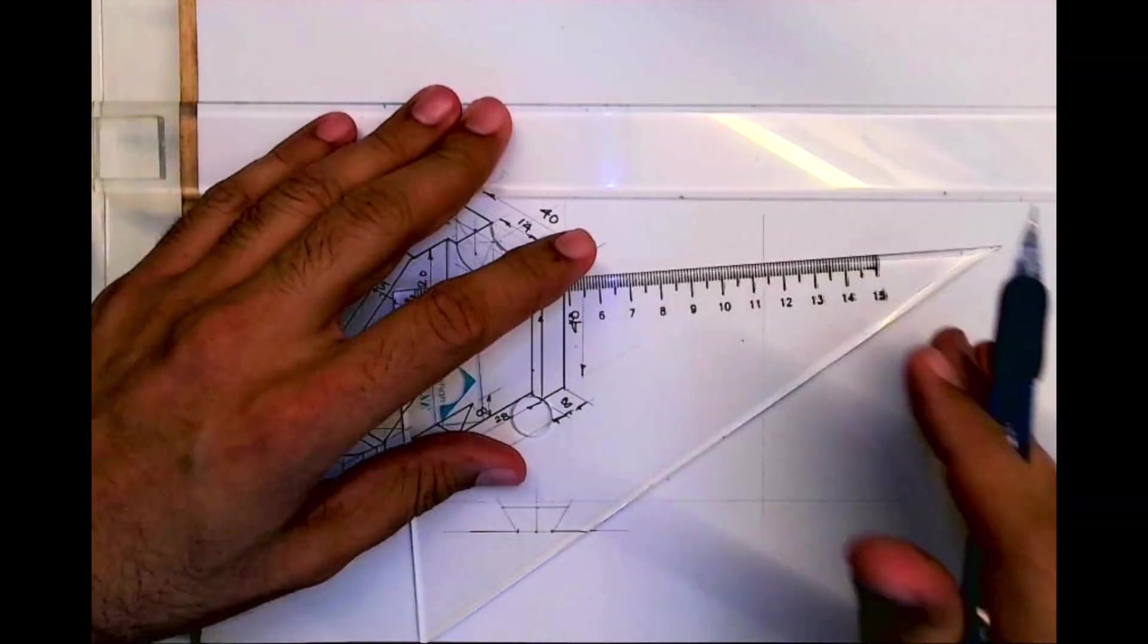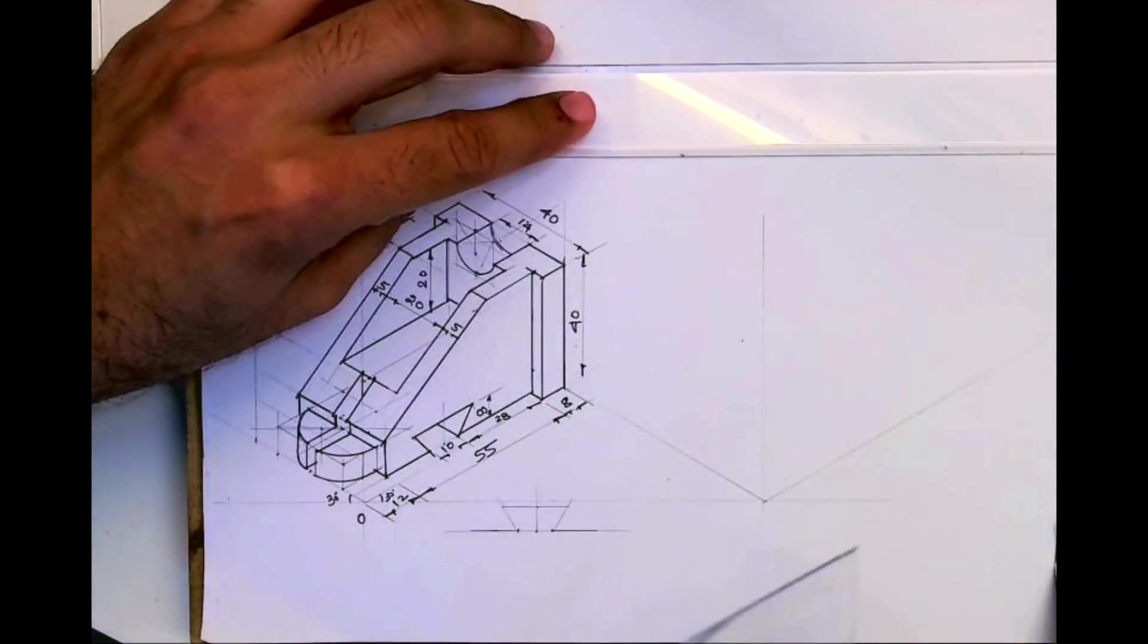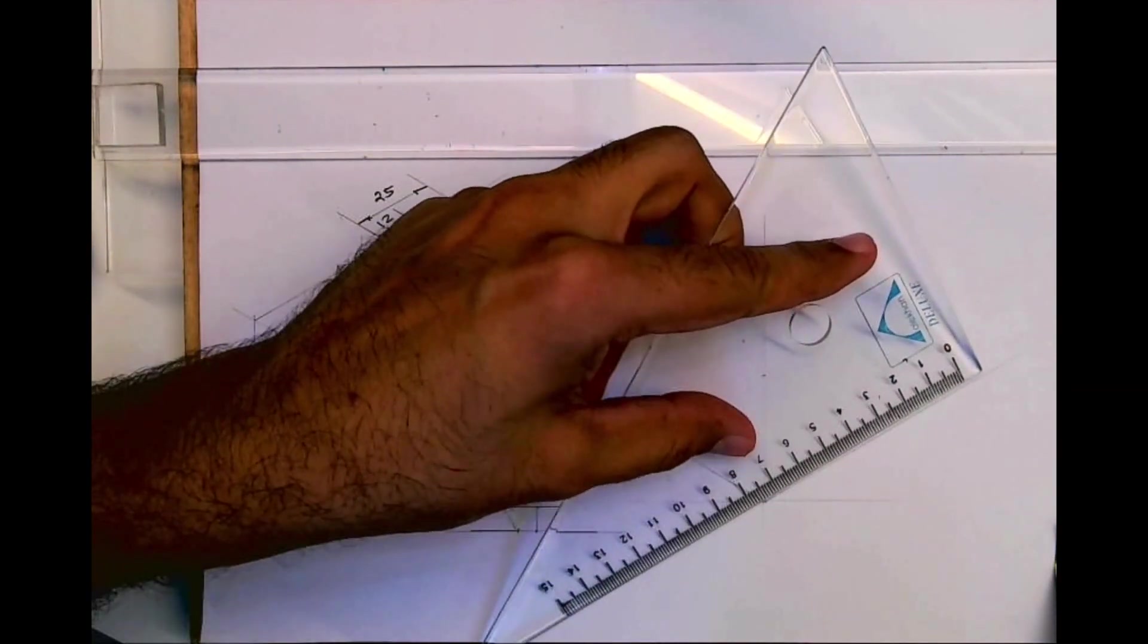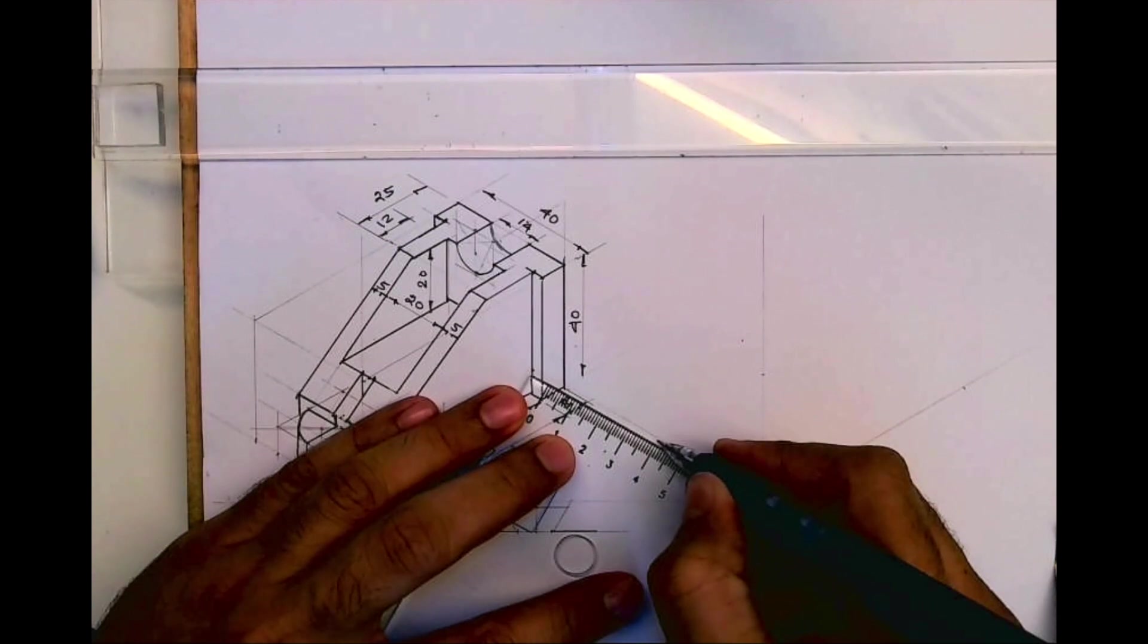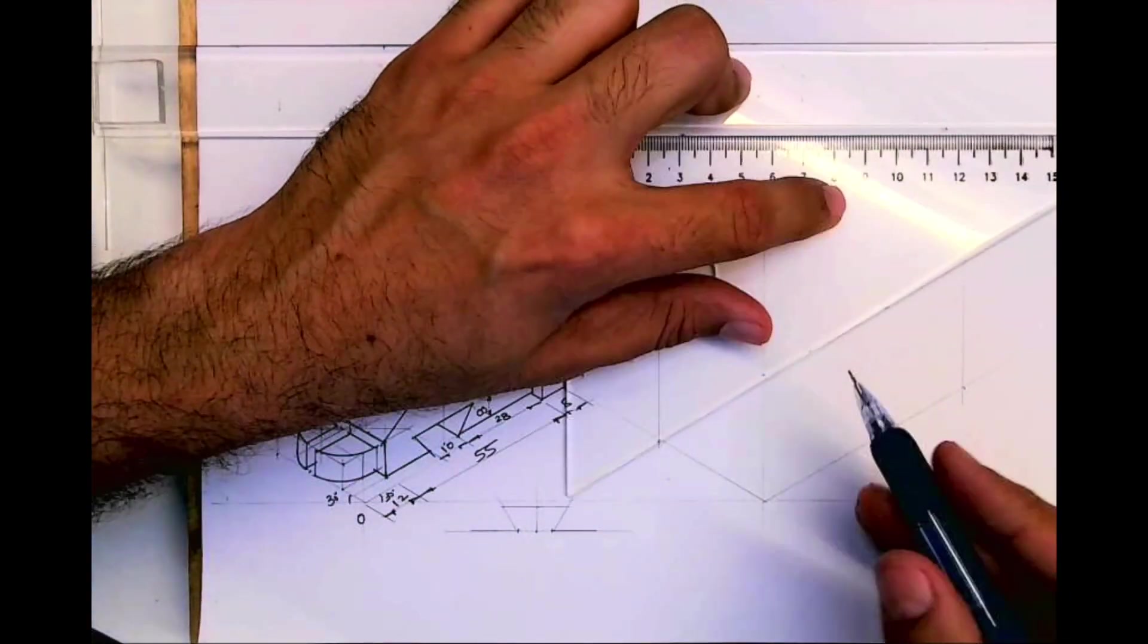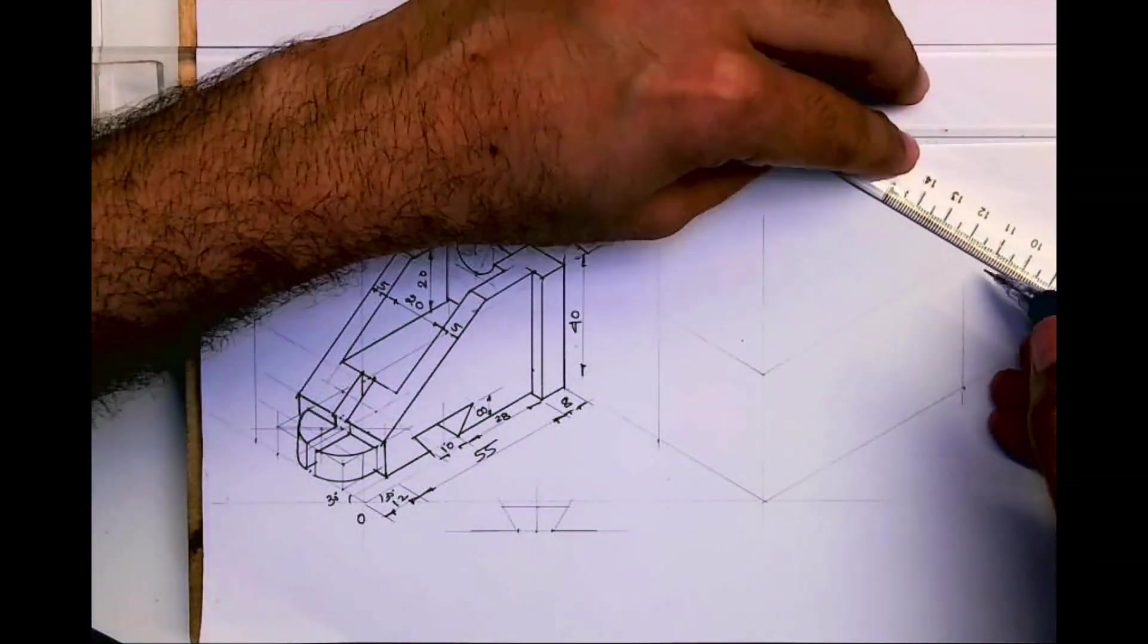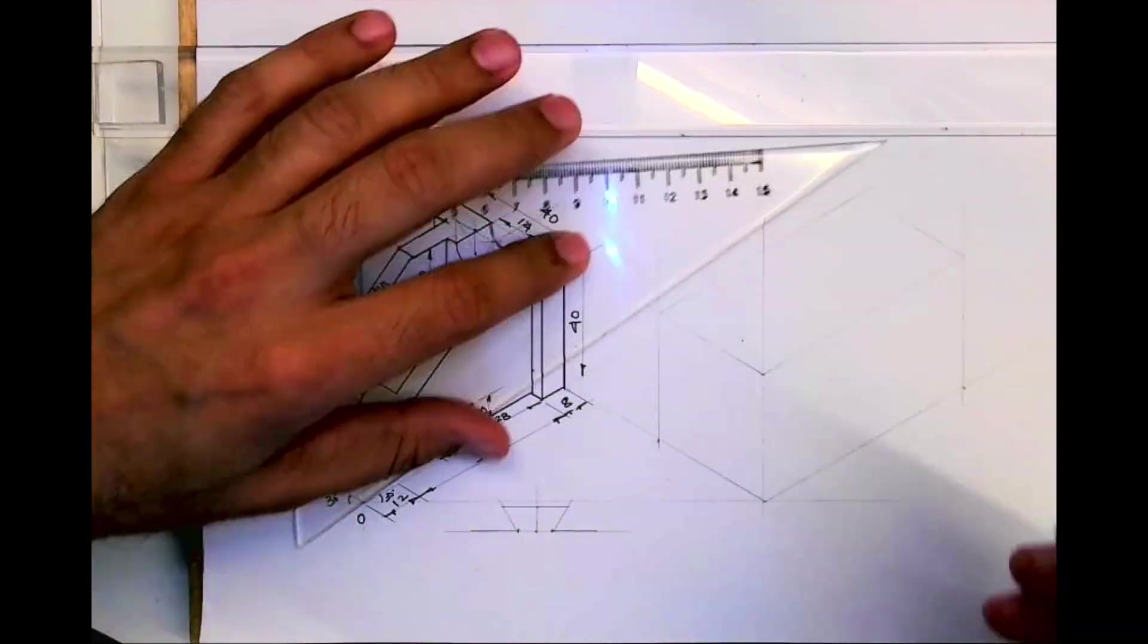Welcome to technical drawing. Today we'll draw this sum in isometric copy. First we will draw 30-30-30. If you see, height is 40, length is 75, and width is 40. So first we'll mark all these three dimensions and we will draw the layout. I hope everyone knows how to draw this box.